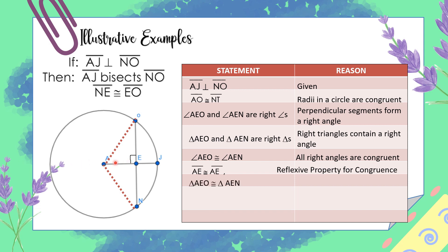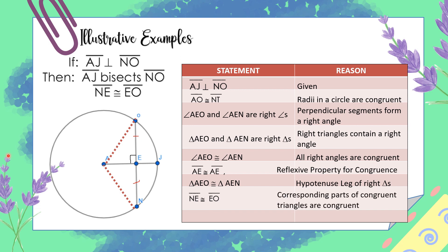Triangle AEO is congruent to triangle AEN by the corresponding parts of congruent triangles are congruent. Therefore, segment AJ bisects segment NO, because a segment bisector forms two congruent segments.